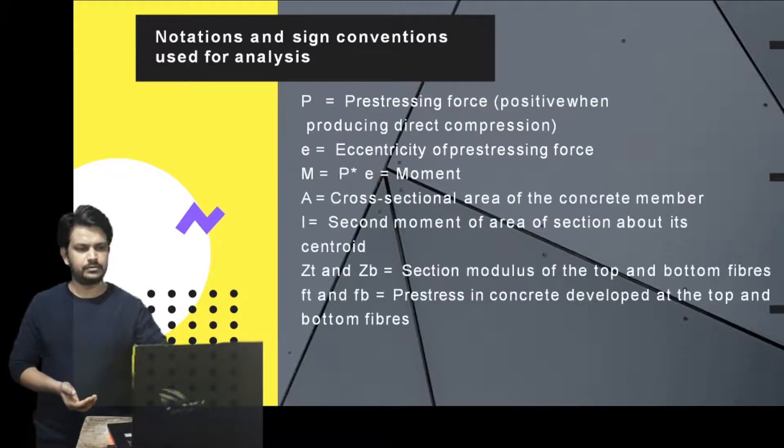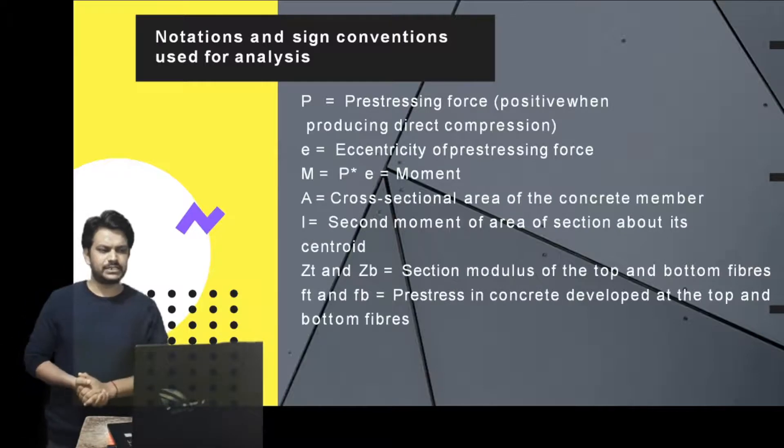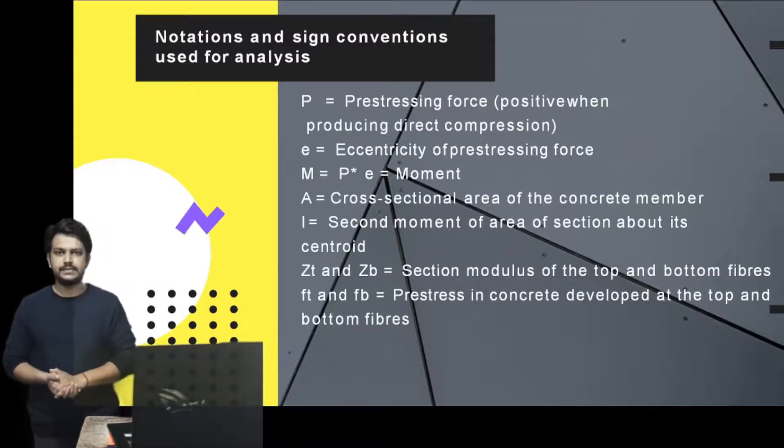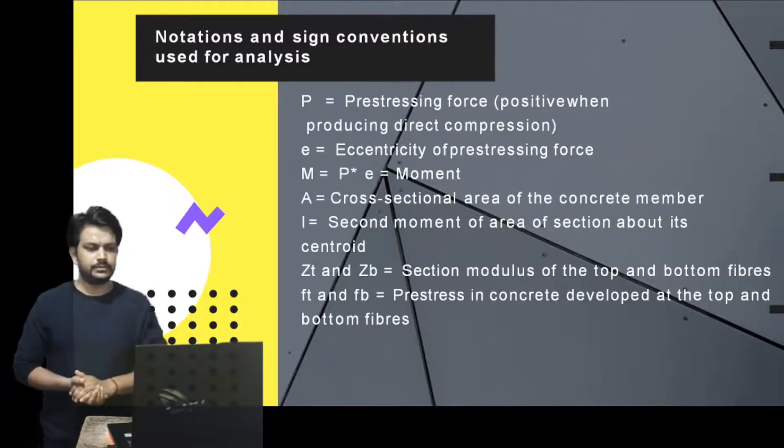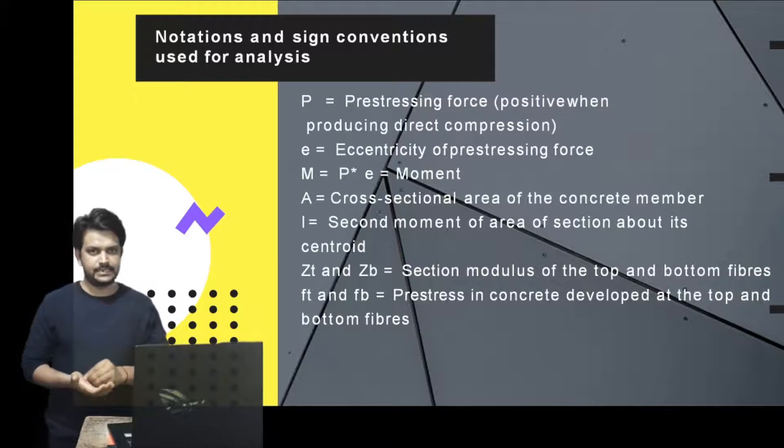A is the cross-sectional area of the concrete member. I is the second moment of area, that is the moment of inertia. ZT and ZB are the top and bottom section modulus.